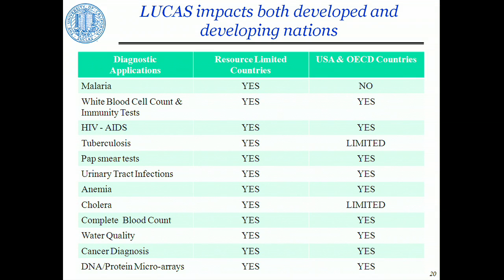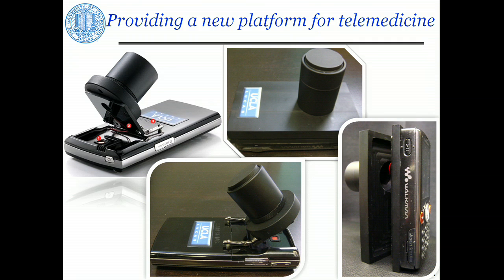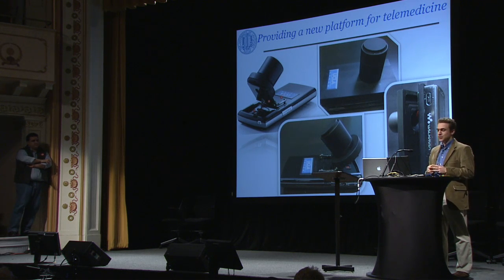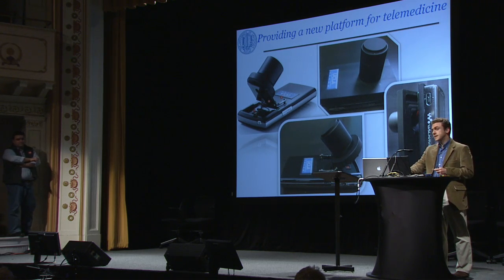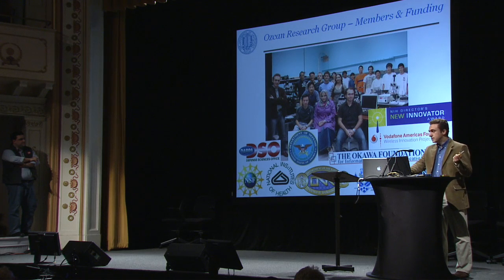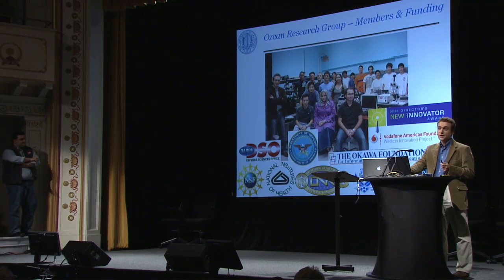The same technology is also applicable to various other developed-country problems. To summarize, I've introduced to you a technology which is absolutely lens-free. It works based on detection of cell shadows rather than their images, and that's why it's very cost-effective, compact, and lightweight — something you can carry in your pocket. With this, I'd like to conclude and acknowledge my funding agencies and my students. Thank you.